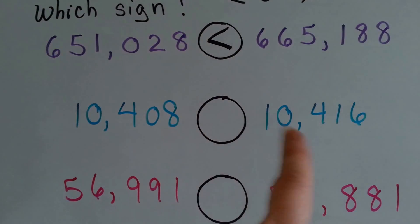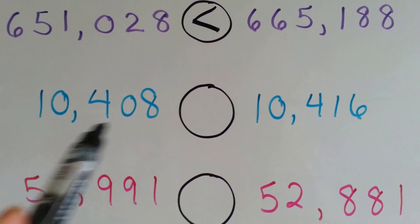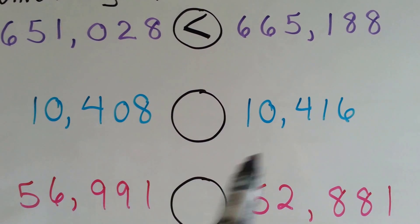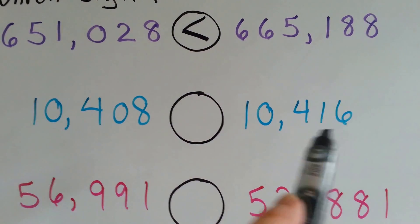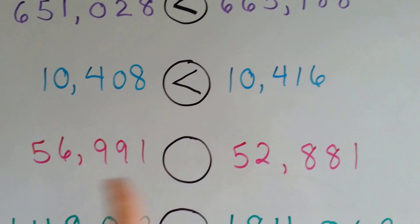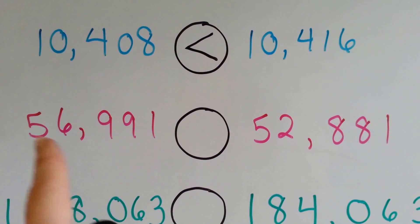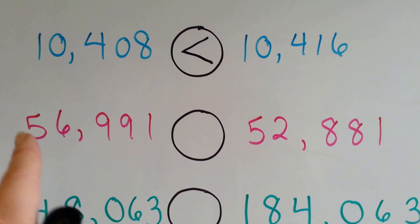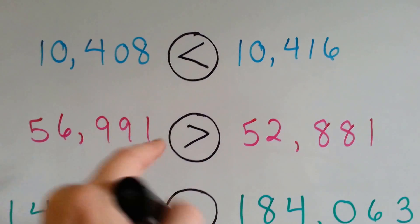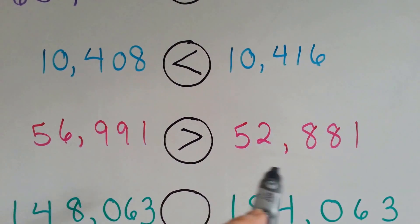So big mouth eats big number. How about this one — which one's bigger? If you said this one, you're right. The numbers are almost the same; they each have 10,400, but this one doesn't have any tens while this one has one ten. 16 is bigger than 8, so this one is bigger — big mouth eats big number. Now how about this one? They both have five in the ten-thousands place, but if you said this one, you're right: it has a six in the one-thousands place and this one only has a two. So the big mouth goes that way — 56,991 is greater than 52,881.